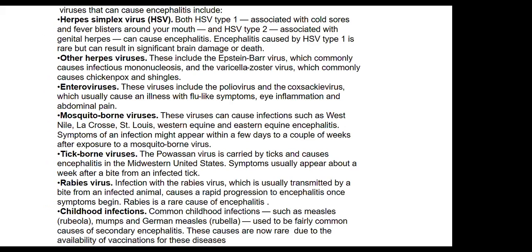Viruses causing encephalitis: herpes simplex virus type 1 is associated with cold sores and fever blisters around the mouth; type 2 causes genital herpes. Encephalitis caused by type 1 is rare but can result in significant brain damage or death. Other viruses include Epstein-Barr virus, varicella-zoster virus, enterovirus (including poliovirus), mosquito-borne viruses, tick-borne viruses, and rabies virus. Childhood infections like measles, mumps, and rubella usually cause secondary encephalitis, but are now rare due to vaccination.